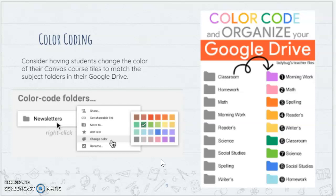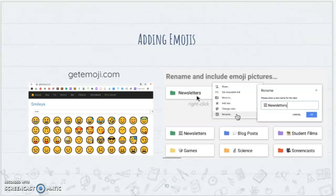If you want to add emojis to folder names, right-click, choose Rename, and then put the emoji wherever you want — in front, behind, wherever. Chromebooks do have an emoji keyboard built in, though it can sometimes be tricky to find depending on how your Chromebook is set up. An easy alternative is to go to getemoji.com — it's very easy to copy and paste. Search for what you want, like a book, calculator, or science test tube, then copy and paste it into the folder name.